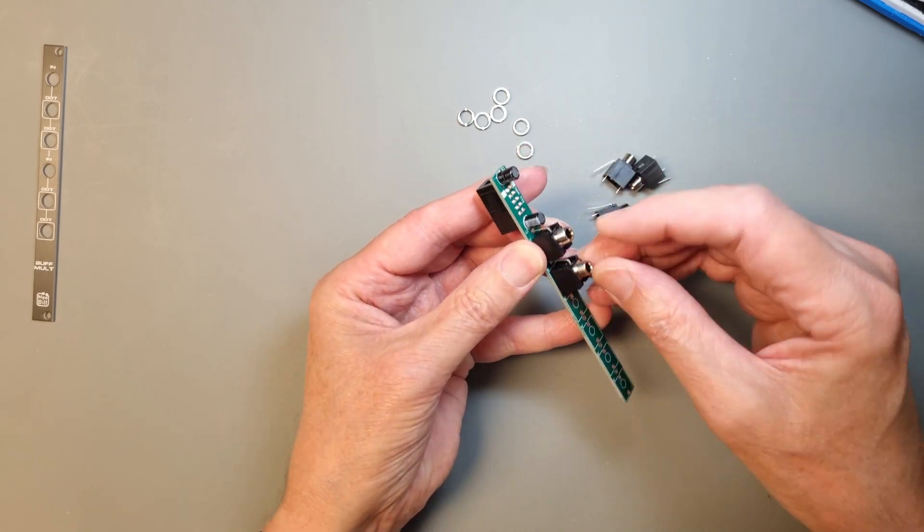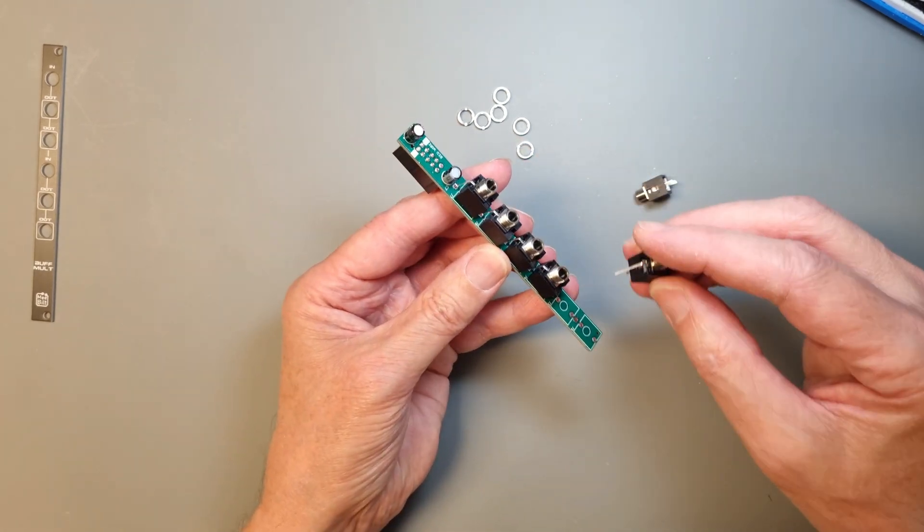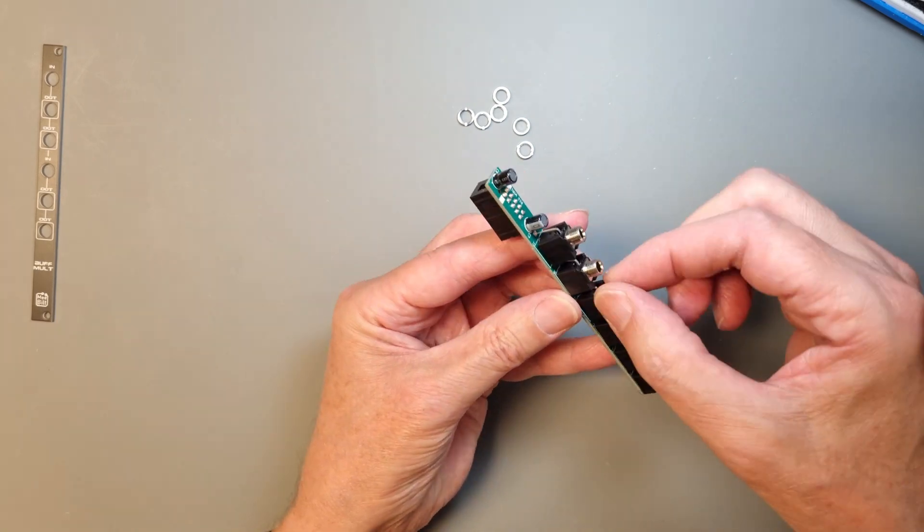Next, mount all the 3.5 millimeter jacks on the PCB and use the panel to hold them in place before you solder them.